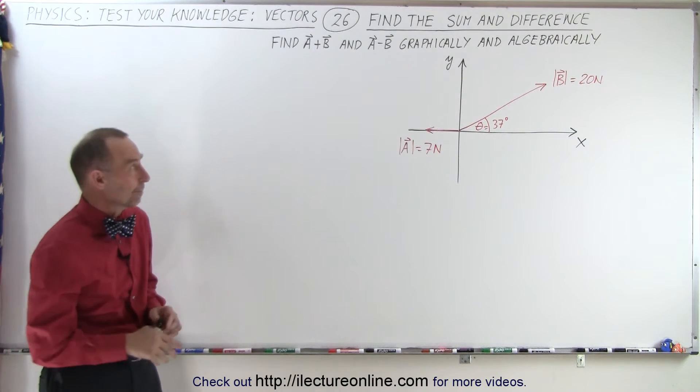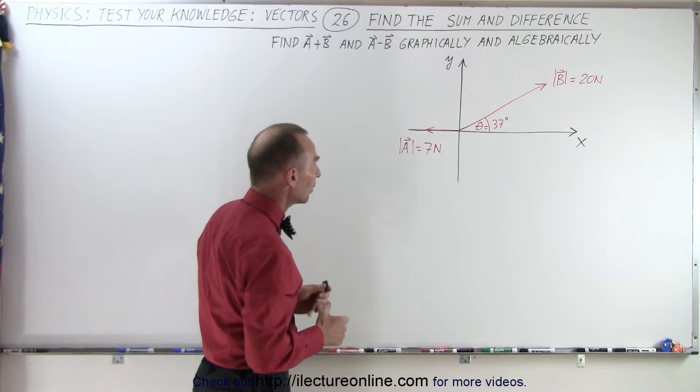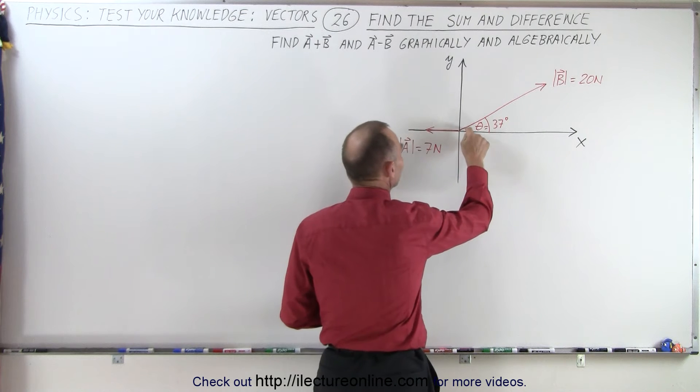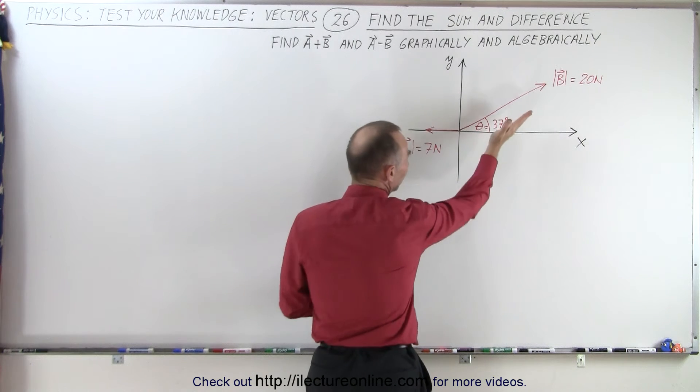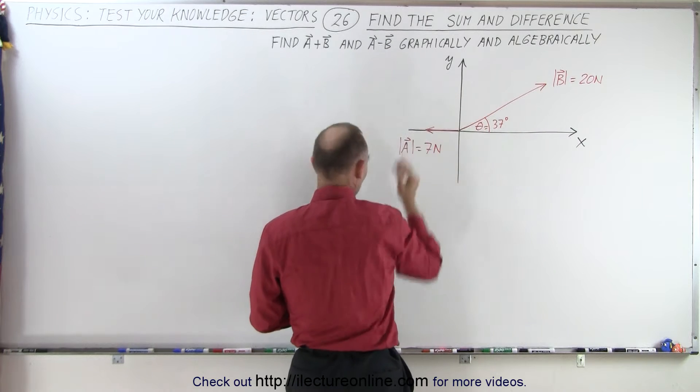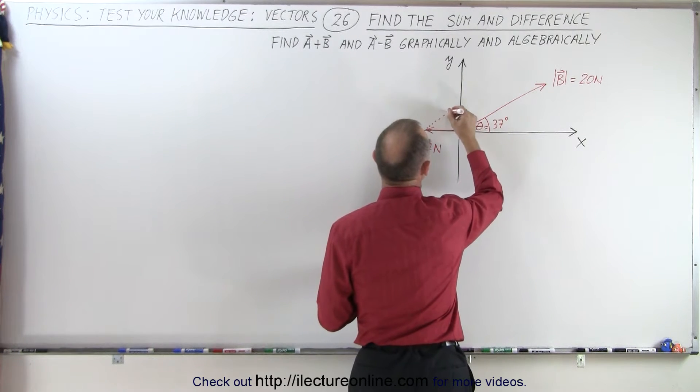So let's start with graphically. We want to do A plus B, sum the two vectors together, which means we're going to take the tail of vector B and position it at the tip of vector A. So basically you're moving vector B over to this direction. If you do that, vector B will look like this.